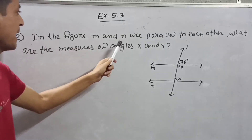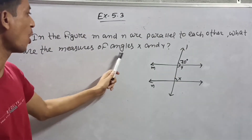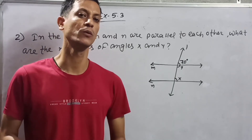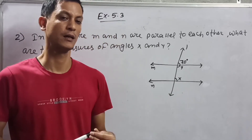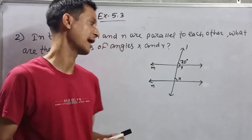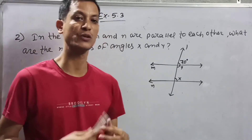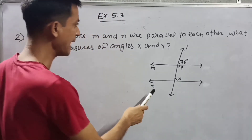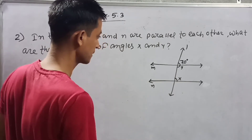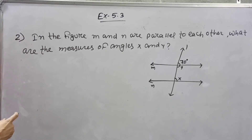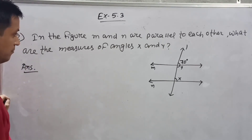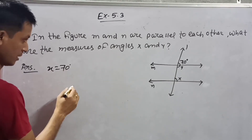Number two: in the given figure, M and N are parallel to each other. What are the values of angles X and Y? I made a video on transversal — if you have any doubt, you can watch that video. Here, M and N are parallel and L is a transversal. This angle and this angle are corresponding angles. Answer: X is equal to 70 degrees, corresponding angles.